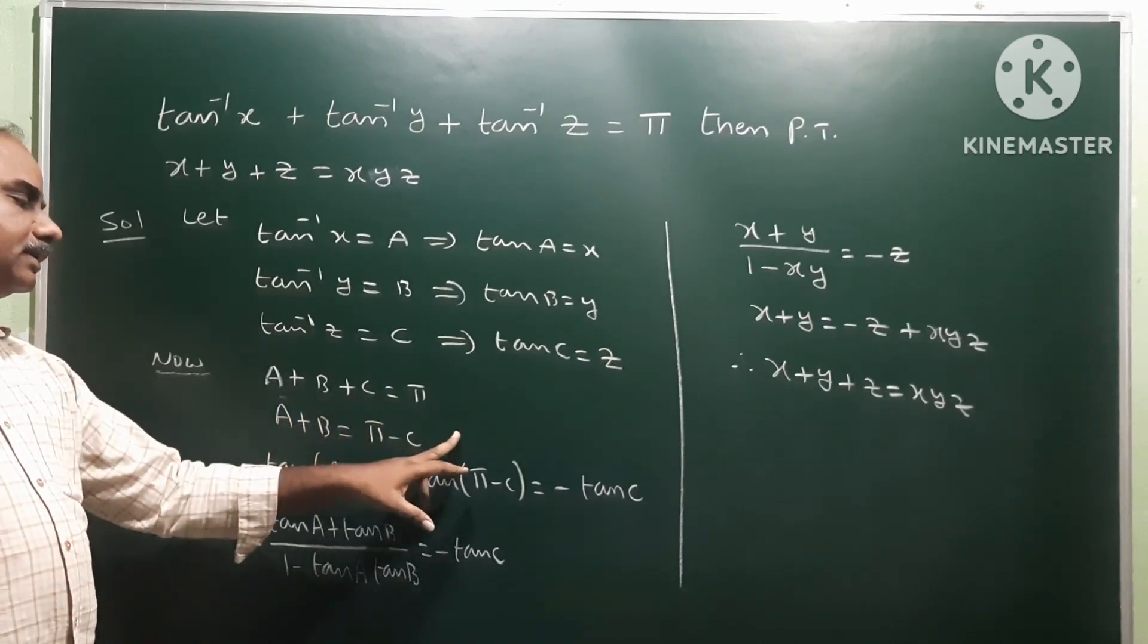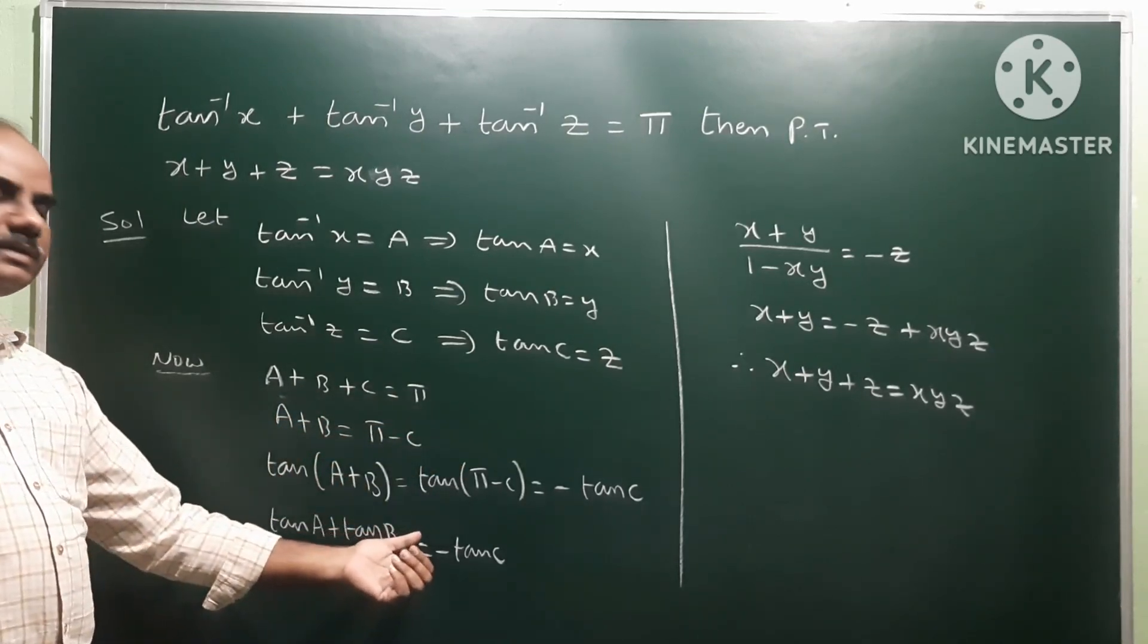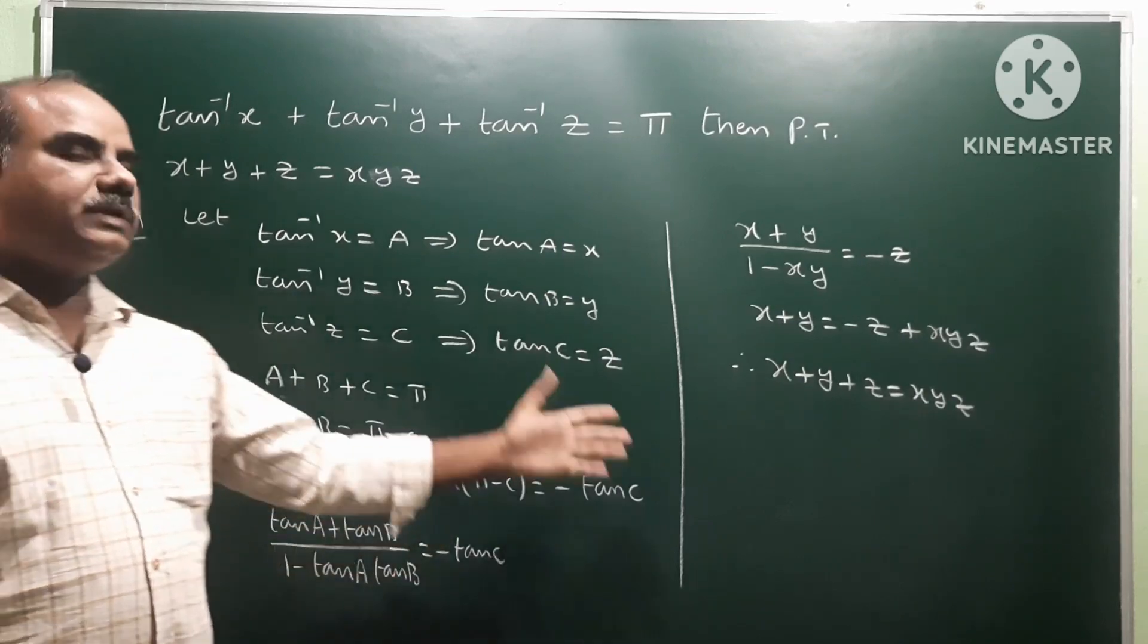Transposing one of these values to right side and then take tan on both sides. Apply the formula, substitute the values, we get the result.